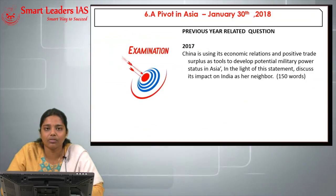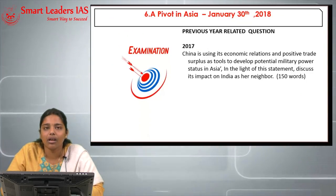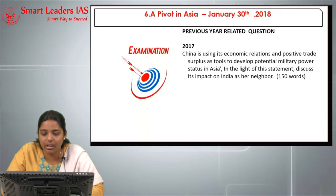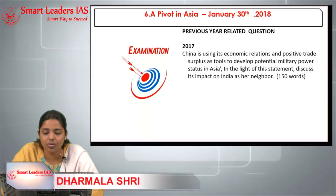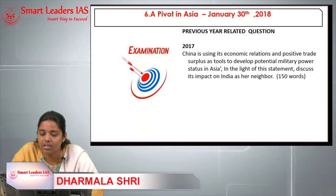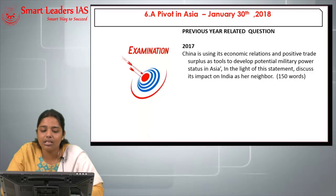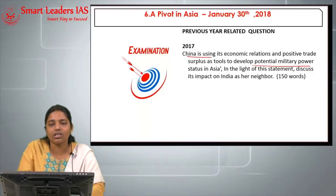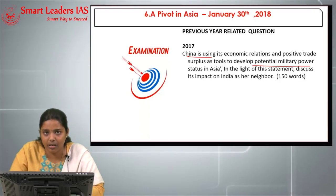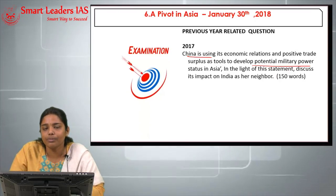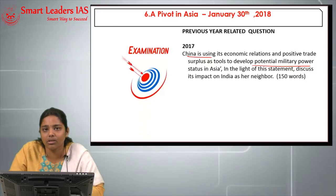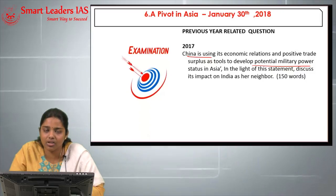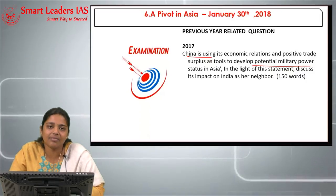A related 2017 UPSC question stated: 'China is using its economic relations and positive trade surplus as tools to develop potential military power status in Asia — discuss its impact on her neighbors.' We can expect a question on how the Pivot in Asia can counter Chinese aggression in the Indo-Pacific region. Prepare well. All the best.